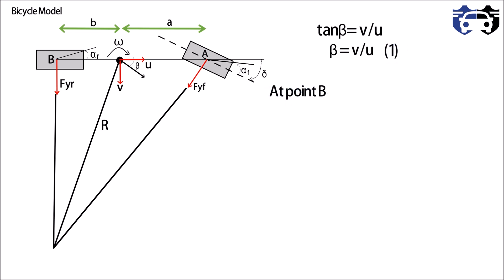Now if we want to write the velocity at point B, then in upward direction we are having b into omega due to yaw rate omega of vehicle, and in downward direction we are having the lateral velocity v of vehicle. In forward direction the point B is moving with the velocity u, that is the forward velocity of vehicle.